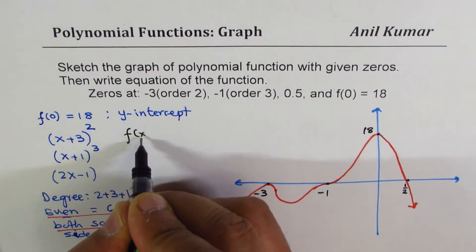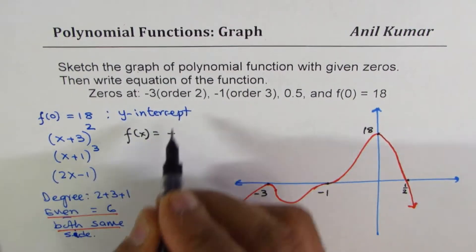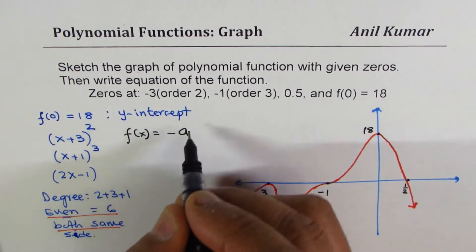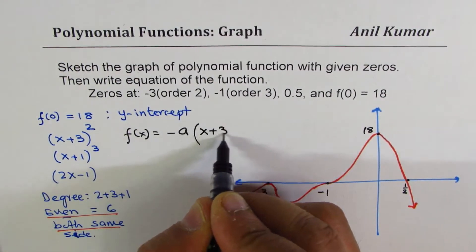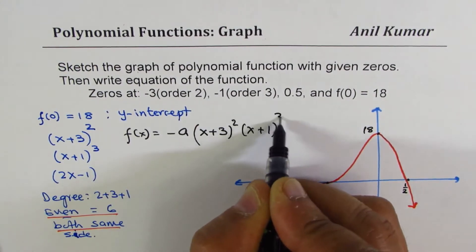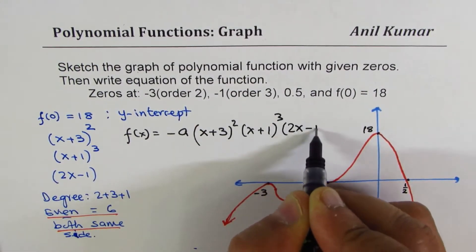So, I can write my function f of x as negative, some value of a, which we can calculate using the y-intercept. And these factors, which are x plus 3 whole square times x plus 1 cube times 2x minus 1.